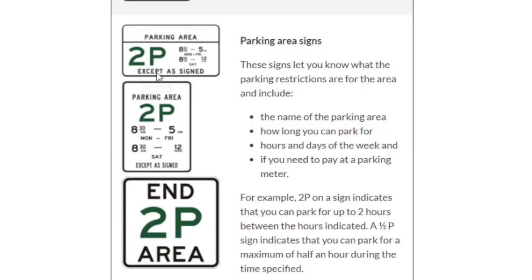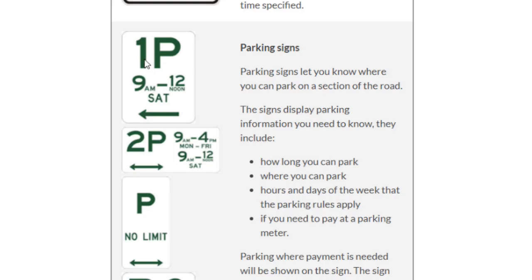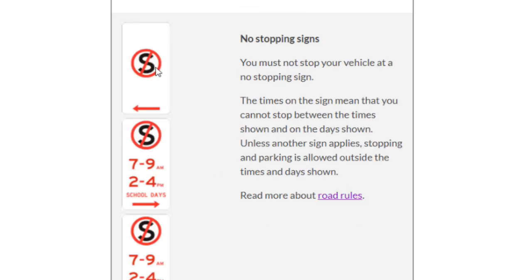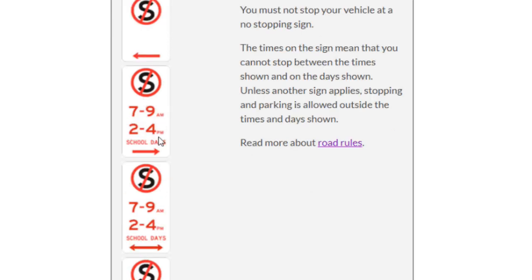The green 2P sign means you can park there for two hours — 2 means two hours and P means parking. It also displays the days and times during which you can park. 1P means you can park for one hour. For example, 9 am to 12 noon Saturday means you can only park during that time on Saturdays. The no stopping sign means you should not stop in that section of the road — during displayed timings you cannot stop, but outside those times you can.